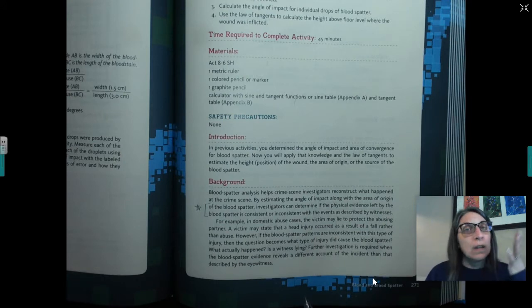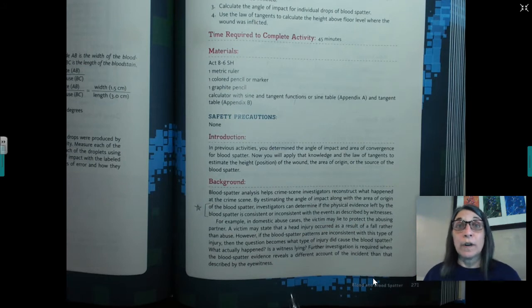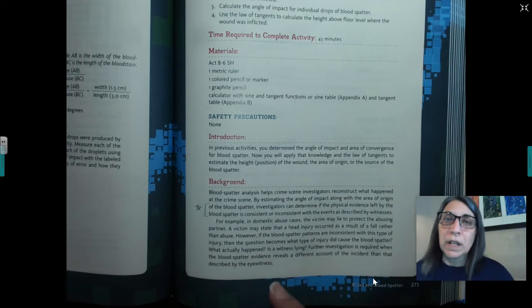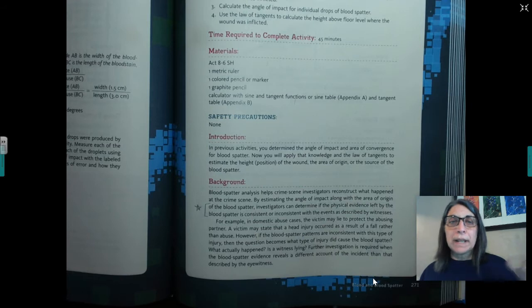However, if the blood spatter patterns are inconsistent with this type of injury, then the question becomes what type of injury did cause the blood spatter? What actually happened? Is the witness lying? Further investigation is required when the blood spatter evidence reveals a different account of the incident than described by the witness. So this is a huge part of current forensics, doing all this blood spatter analysis. This is kind of our biggest challenging chapter besides DNA.